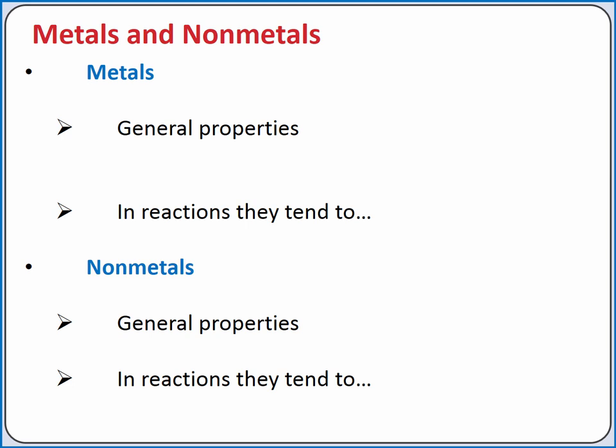Metals have distinctive properties. They are generally malleable, which means they can be hammered into sheets, ductile, which means they can be pulled into wires, shiny, solids at room temperature, and good conductors of heat and electricity.